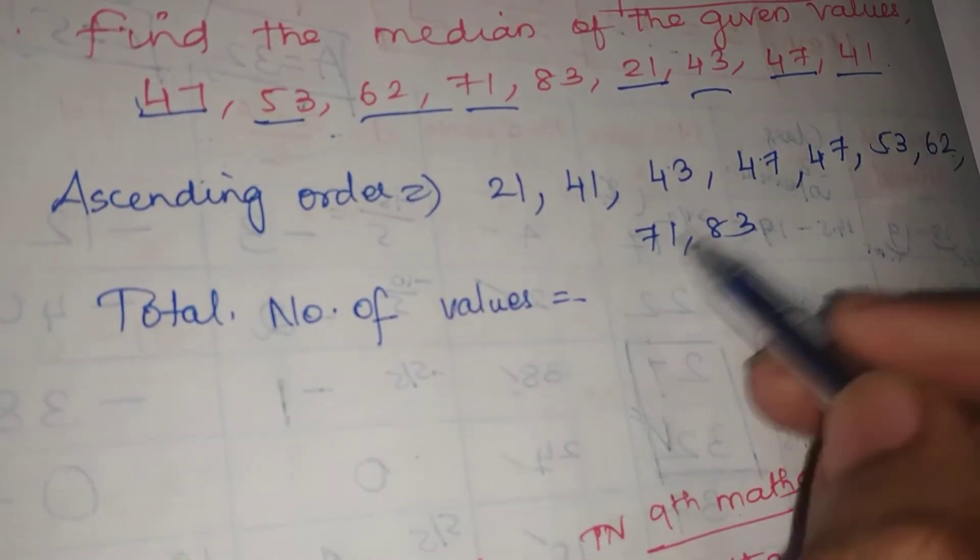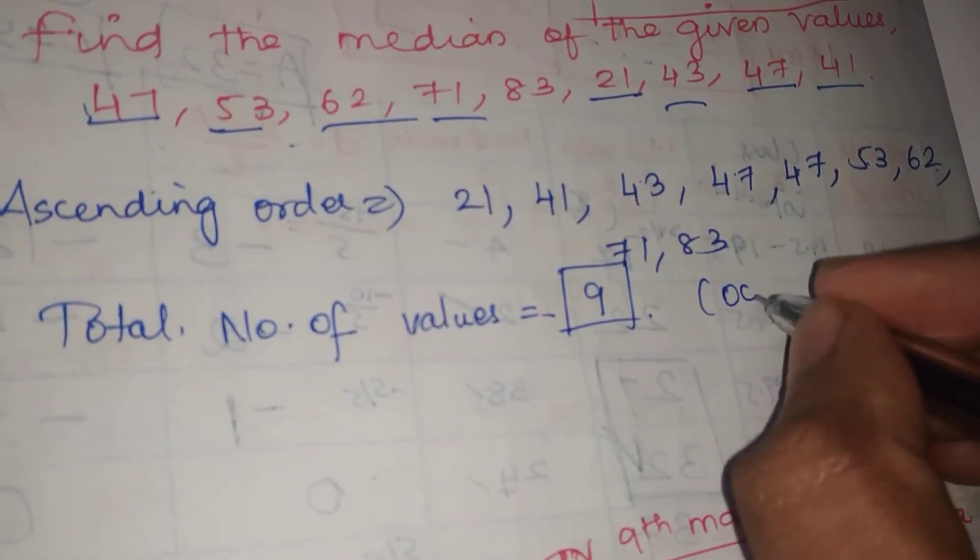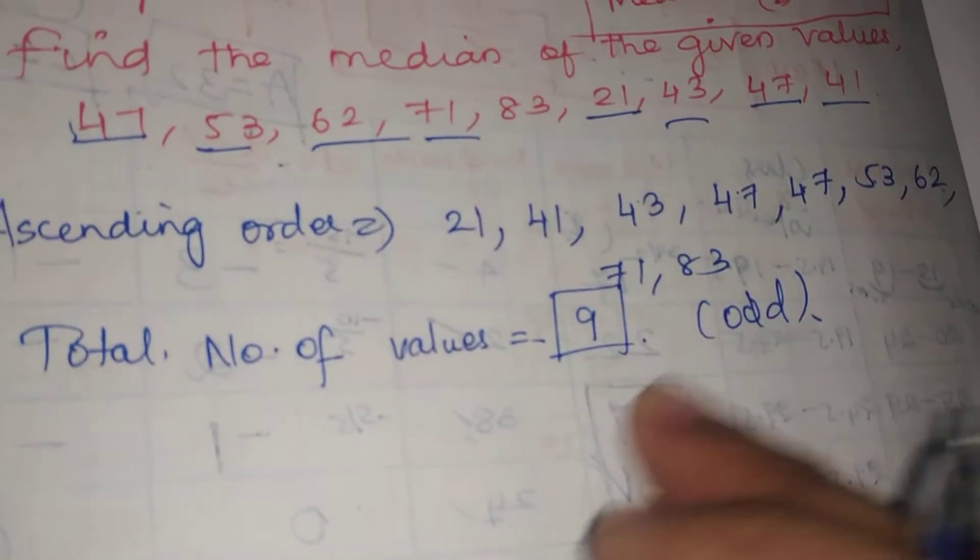Counting: 1, 2, 3, 4, 5, 6, 7, 8, 9. The total number of values N equals 9, which is odd.